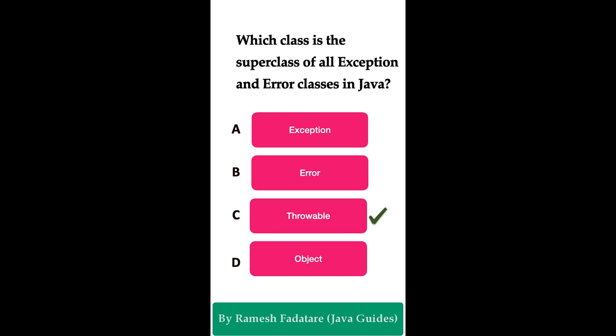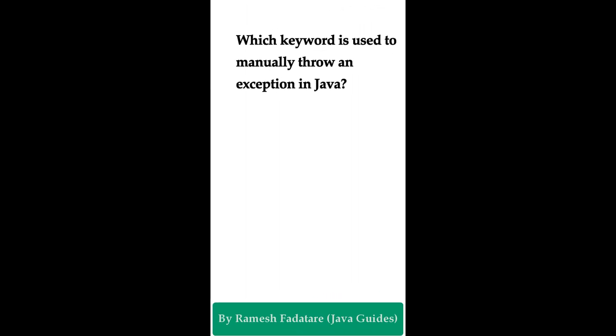The correct answer is Option C: Throwable class. In Java, the Throwable class is the superclass of all errors and exceptions in the Java language. Both the Exception and Error classes are direct subclasses of the Throwable class. This design allows Java programmers to handle all kinds of errors and exceptions in a unified hierarchy.